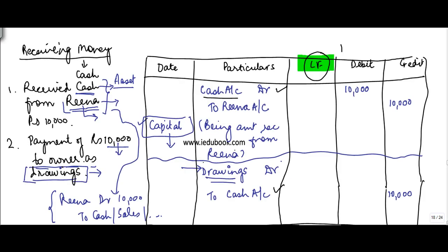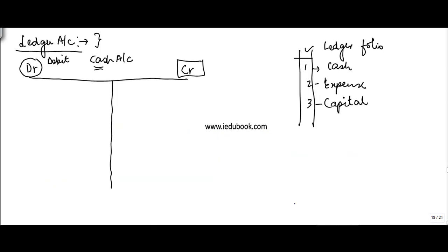In that case, I will need to go through this entire set of journal entries to find out the position of cash. To solve this problem and analyze how a particular account is moving, we make a cash account.